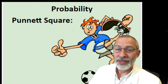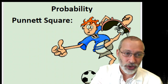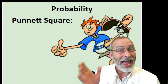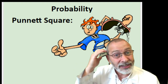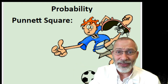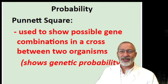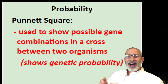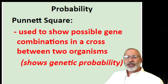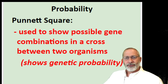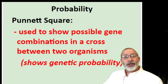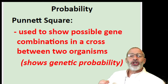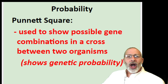A Punnett square is a tool — not like a hammer tool, but an intellectual tool that a person who studies genetics uses to show the possible gene combinations in a cross between two organisms. In other words, it shows genetic probability.